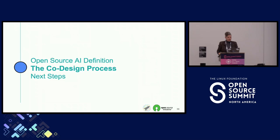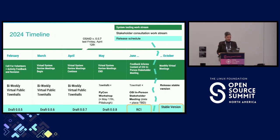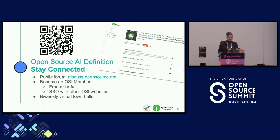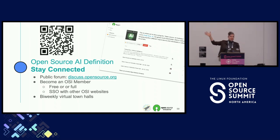Our next steps: we're going to release RC1 in June, and then have a stable version in October. These are the in-person events we will be at if you'd like to join us — some don't have exact dates yet but you get a sense of where we'll be this summer. We'd love for you to stay connected and join the process. That QR code takes you to our forum where we share what we're doing for public comment. We also have bi-weekly virtual town halls — one for Europe, Africa, and the Americas, and one for Asia — so we're being as global as we can.